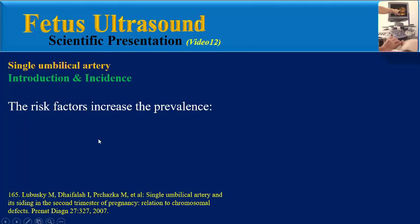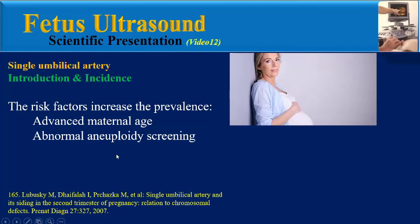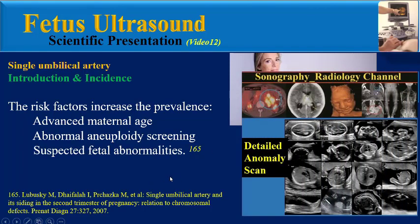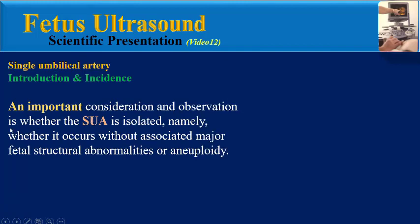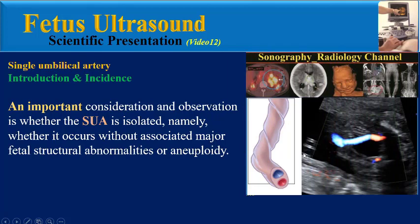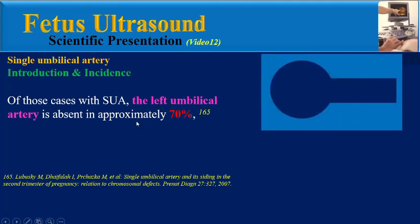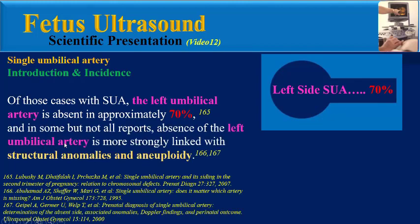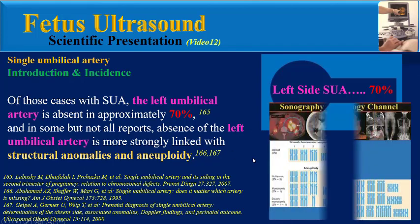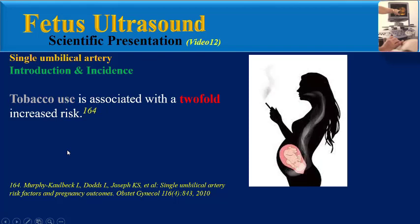Risk factors which increase the prevalence of single umbilical artery include advanced maternal age, abnormal aneuploidy screening, and suspected fetal abnormalities. An important consideration is whether the single umbilical artery is isolated — that is, whether it occurs without associated major fetal structural abnormalities or aneuploidy. In approximately 80 percent of cases, single umbilical artery is an isolated finding. Of those cases, the left umbilical artery is absent in approximately 70 percent.